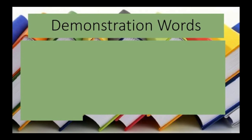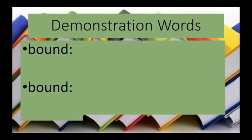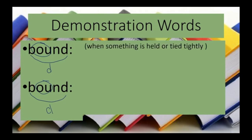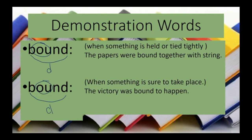Our demonstration words this week are a little different because we have the same word twice. In English, there are words we can use for different meanings but say the same word. We have BOUND for both words. Remember, we have one syllable — bound — and our OU is our double vowel sound, so I mark it with a D. BOUND can mean when something is held or tied tightly: 'The papers were bound together with string.' BOUND can also mean when something is sure to take place: 'The victory was bound to happen.'